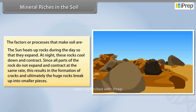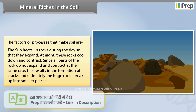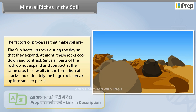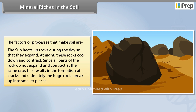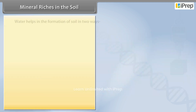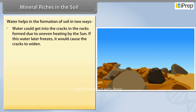One of the factors that makes soil is the Sun. The Sun heats up rocks during the day so that they expand. At night, these rocks cool down and contract. Since all parts of the rock do not expand and contract at the same rate, this results in the formation of cracks, and ultimately the huge rocks break up into smaller pieces.